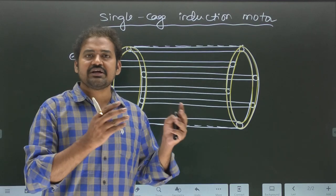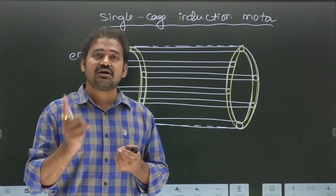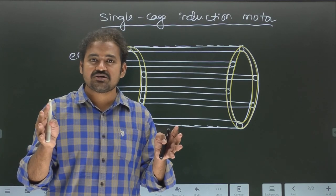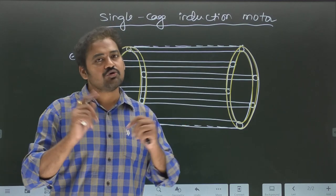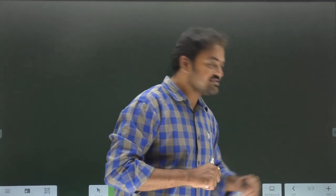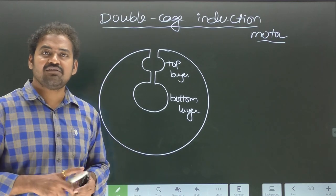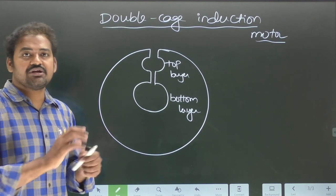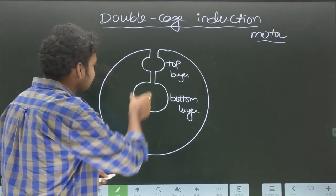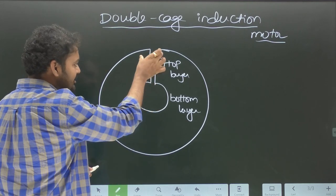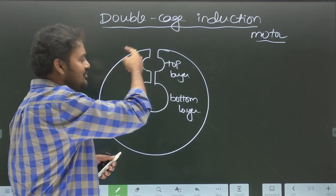Let us understand what exactly is meant by double cage induction motor. Remember, single cage induction motor and double cage induction motor are different in construction only with respect to the rotor. The stator construction is the same in both machines. In the cross-sectional view of a double cage induction motor, we can see the slot structure. One slot is shown here, but a practical machine will have a number of such slots.